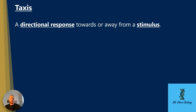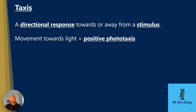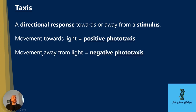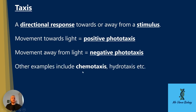Taxis is a directional response towards or away from a stimulus. Movement towards light is defined as positive phototaxis — positive because it's towards, photo because it's light (think photosynthesis, photograph), and taxis meaning movement. Movement away from light is known as negative phototaxis. Other examples include chemotaxis, which is towards or away from a chemical, and hydrotaxis, which is towards or away from water.